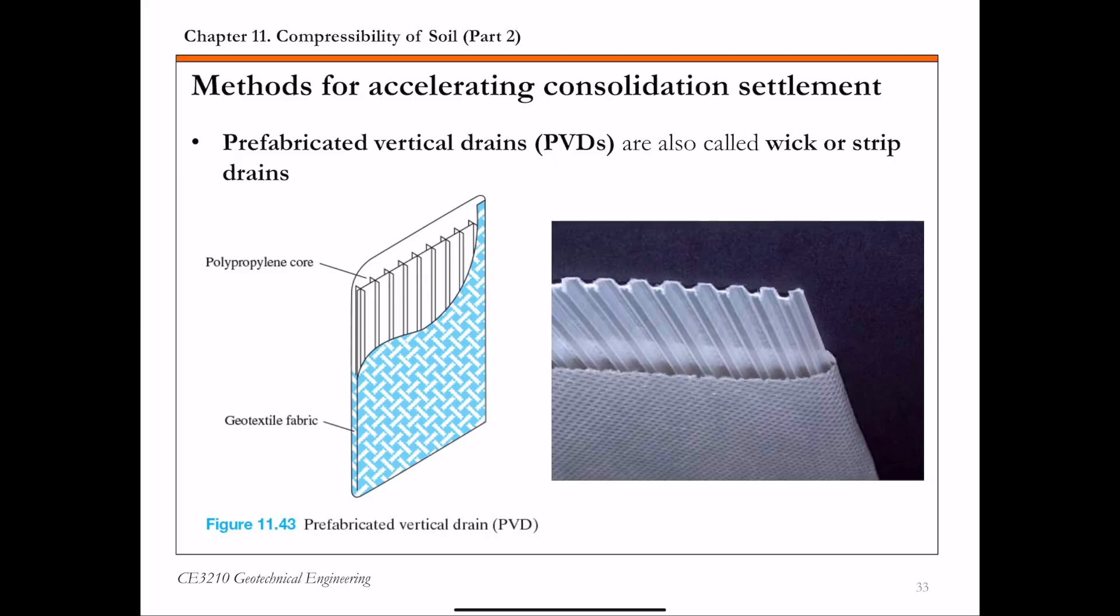The second commonly used field method, actually more commonly used these days, is called prefabricated vertical drains or PVDs, which are also referred to as wick or strip drains. These drains are manufactured from synthetic polymers such as polypropylene and high-density polyethylene.